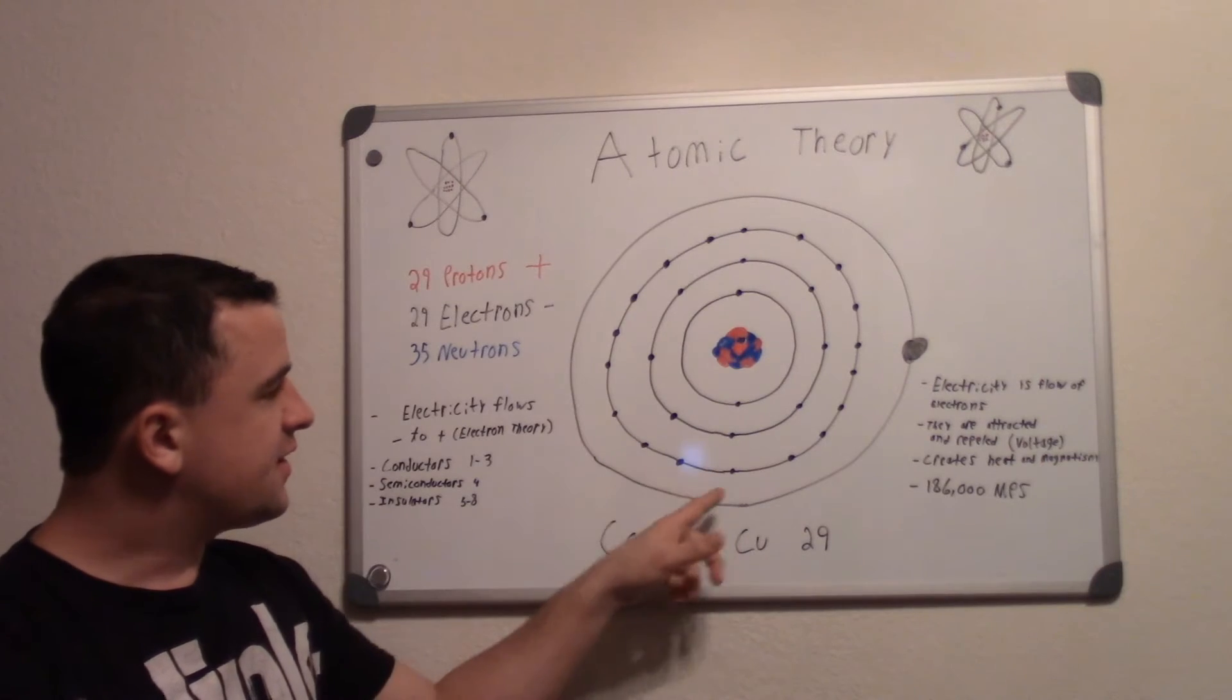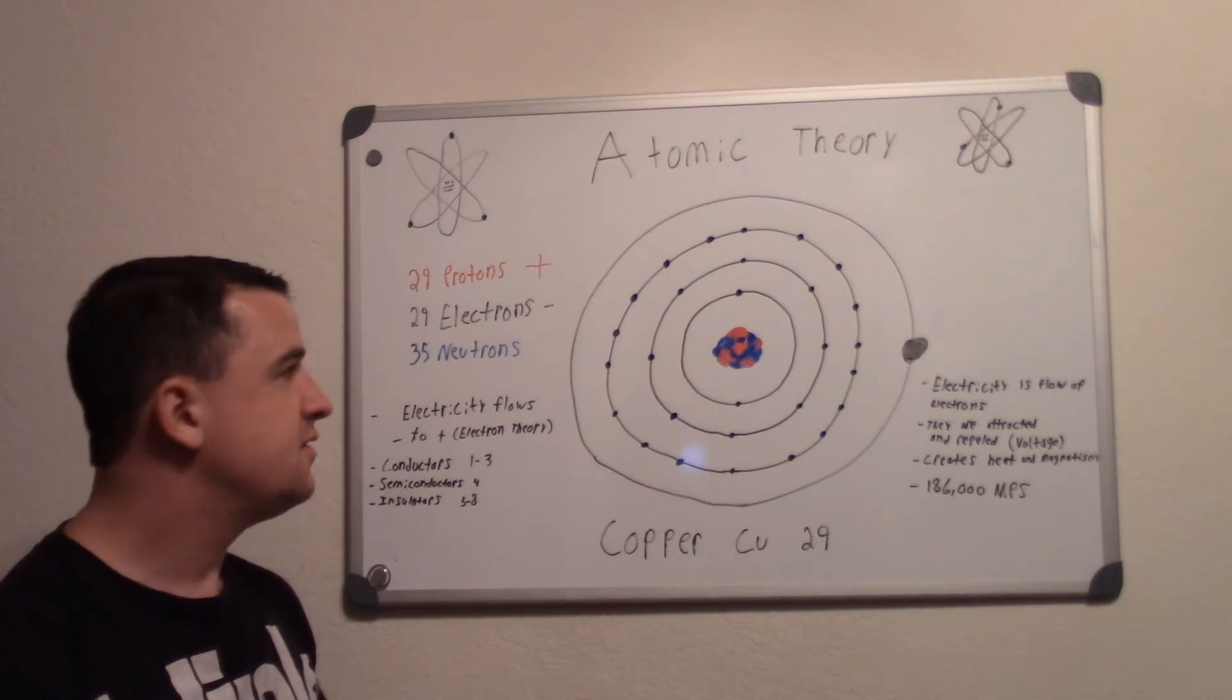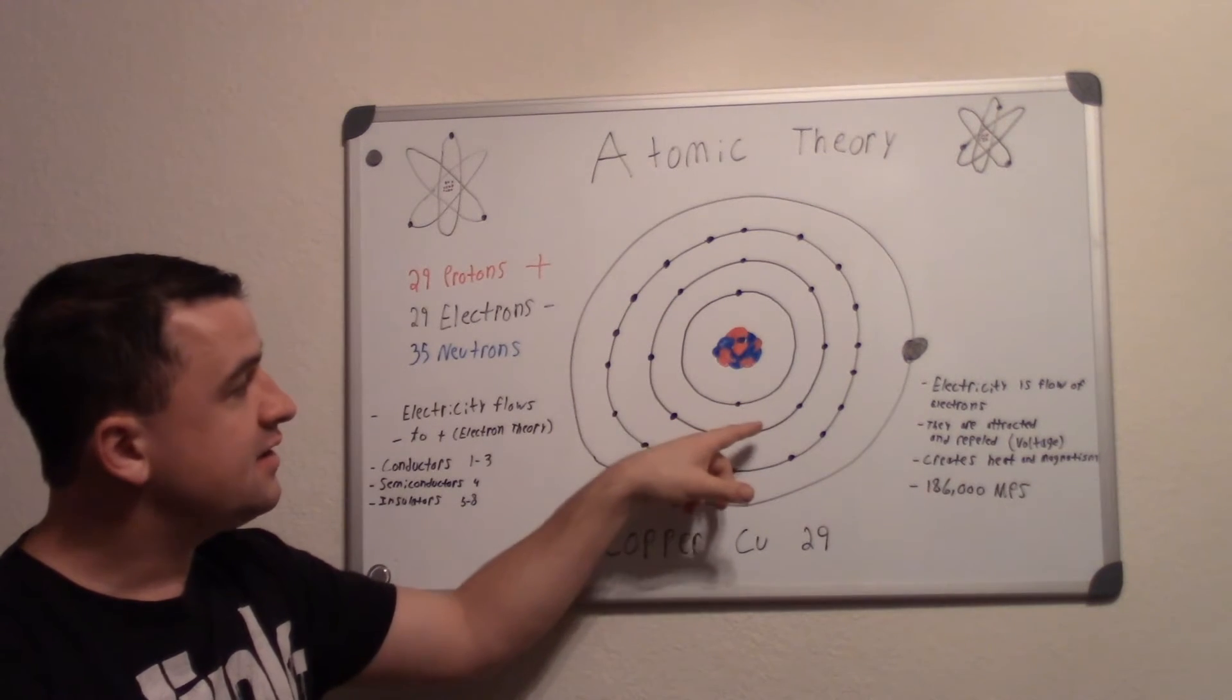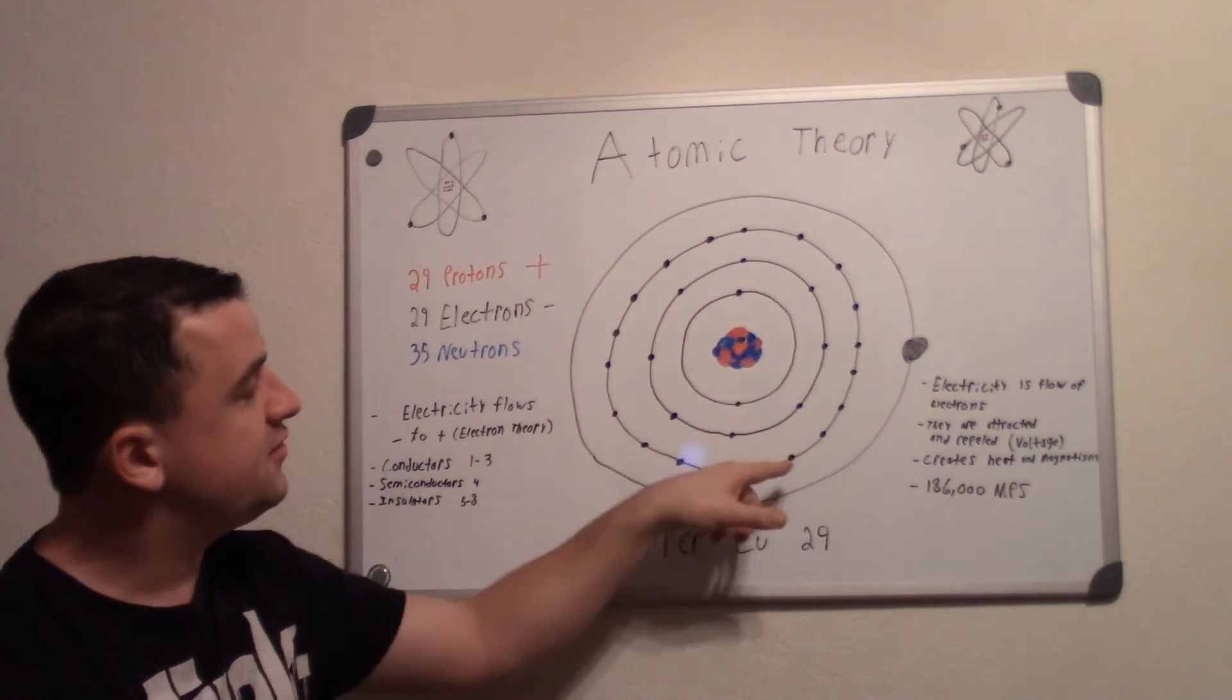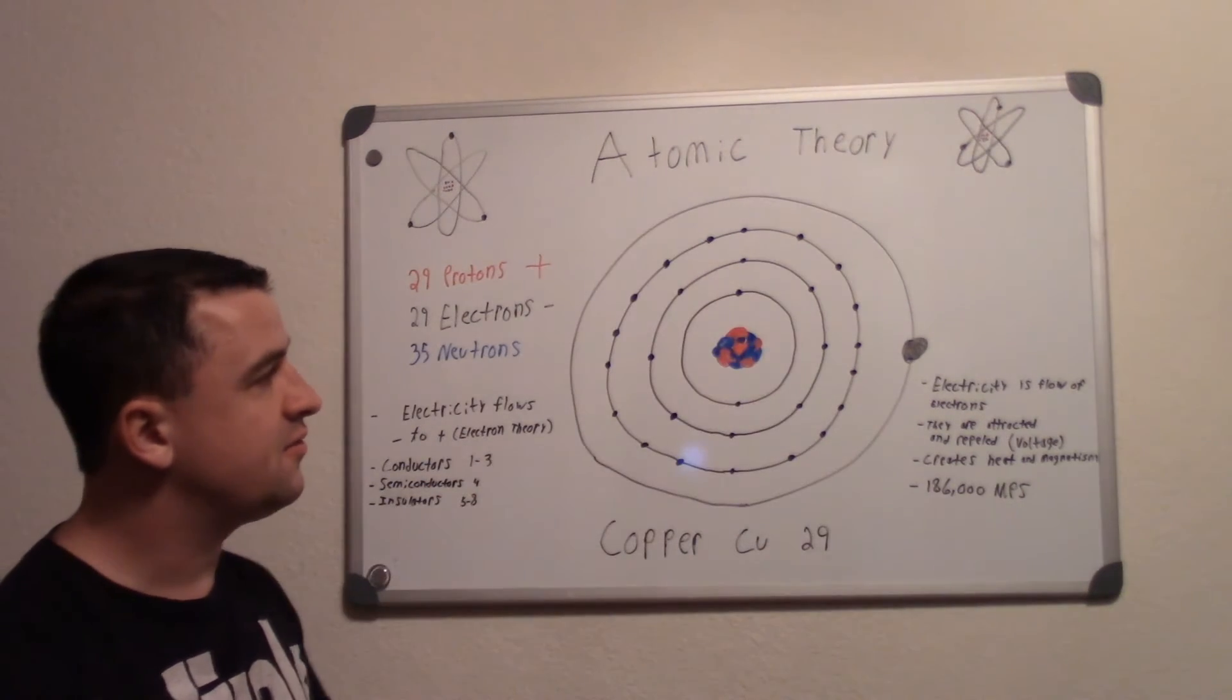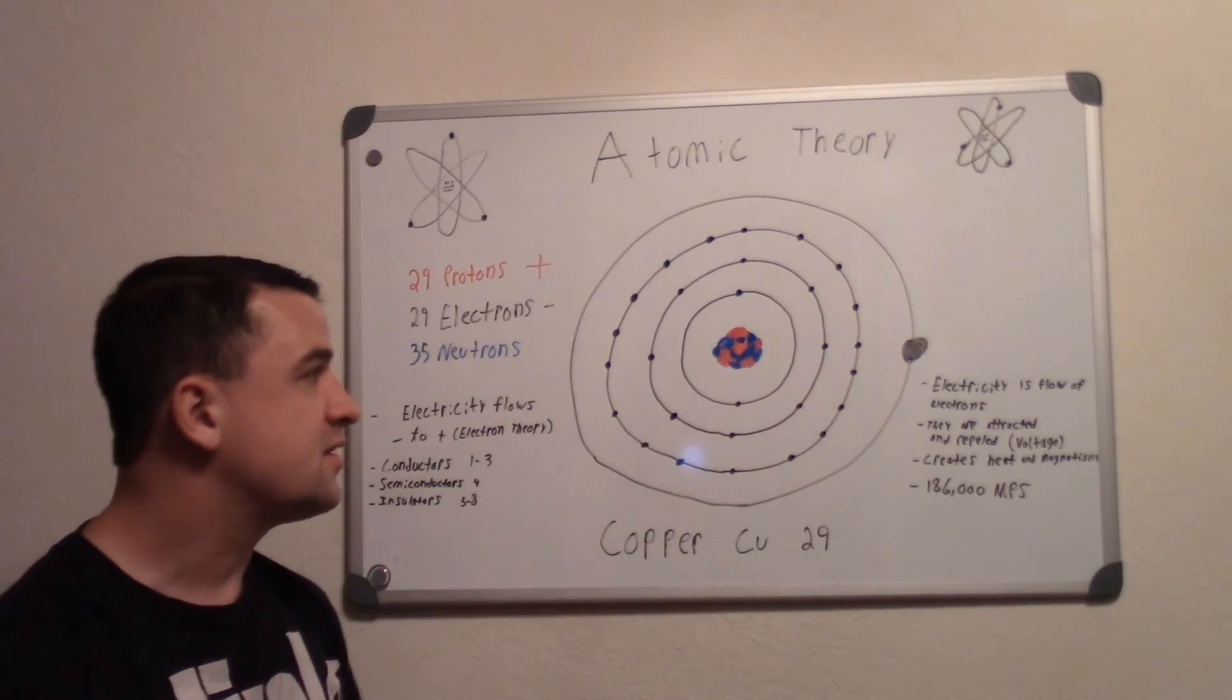And in the copper atom we have a few different rings that hold these electrons. The first ring you have two electrons, the second ring you have eight electrons, the third ring you have 18 electrons, and the outside ring or the valence ring you have one electron, known as the free electron.